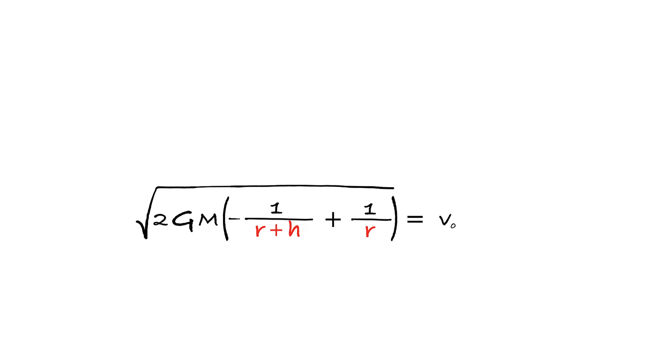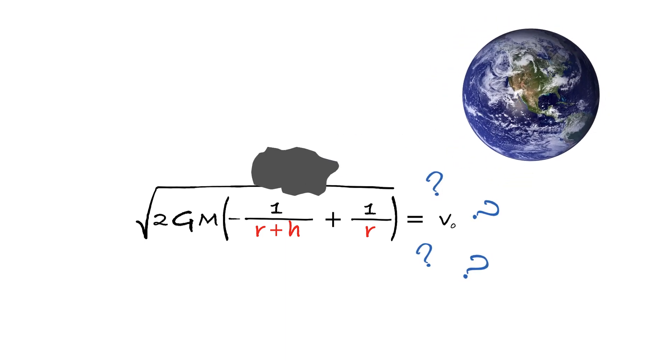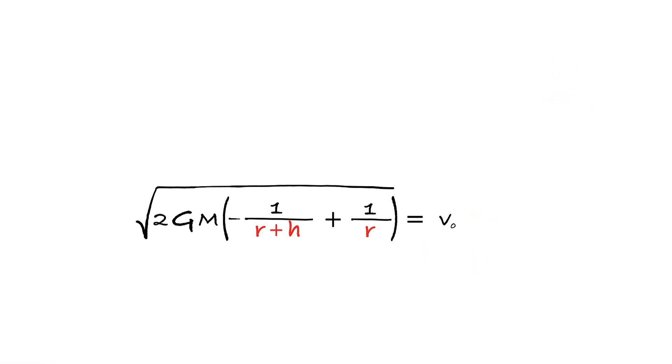Now, this is great because it allows us to answer an even more interesting question. What velocity is needed to throw the rock so hard that it never returns? Well, that means that h tends to infinity and clearly this value tends to zero and our velocity will be as follows.